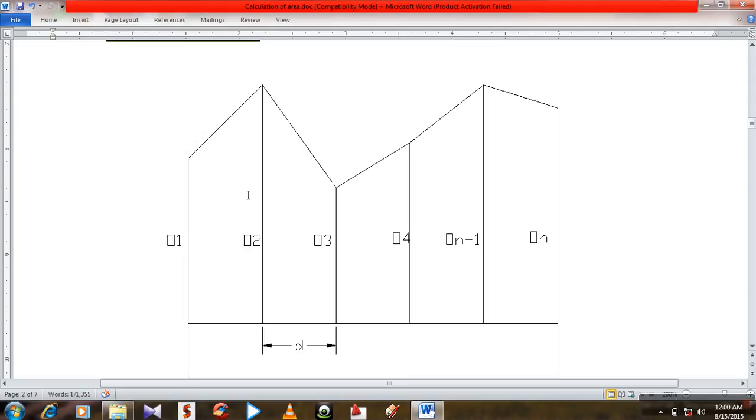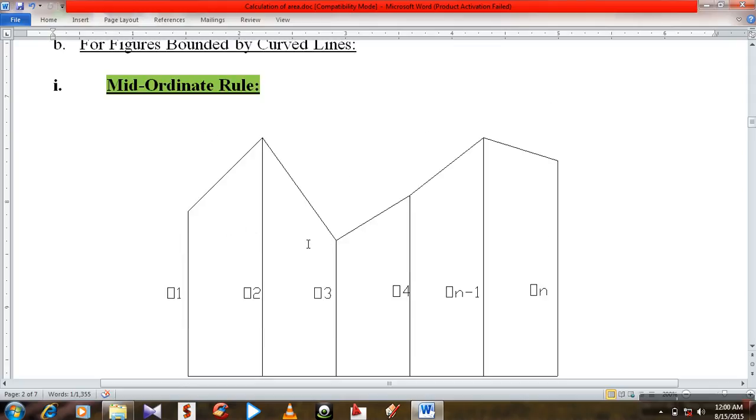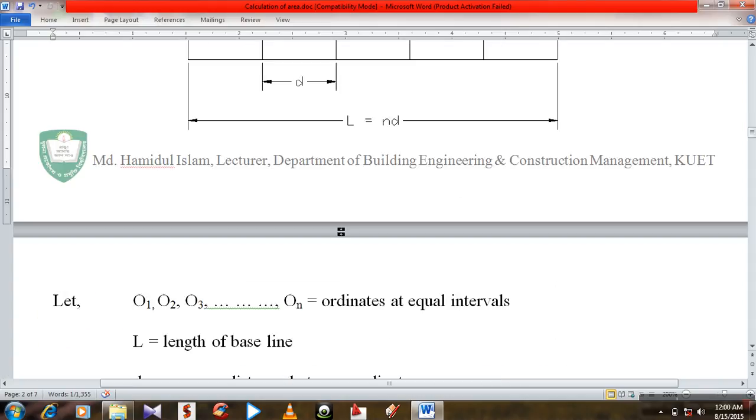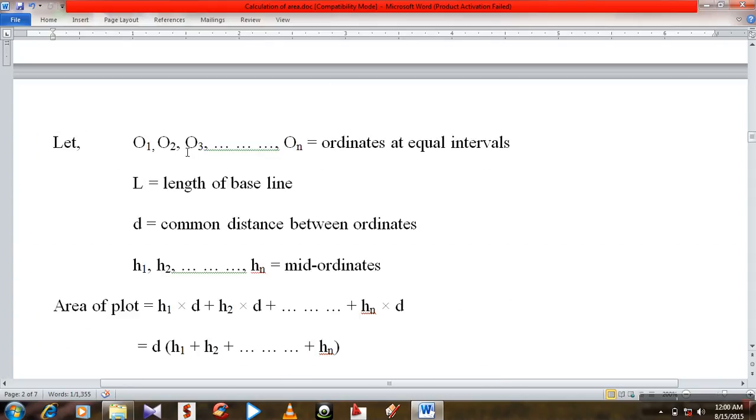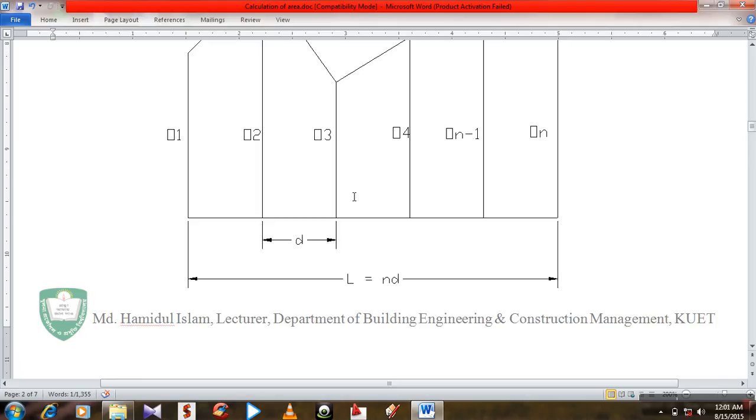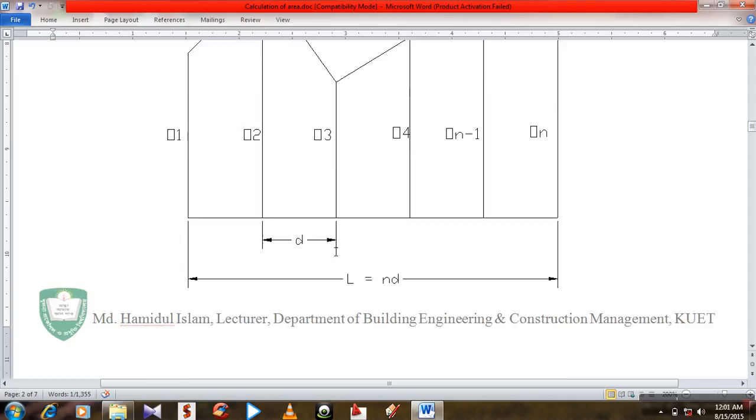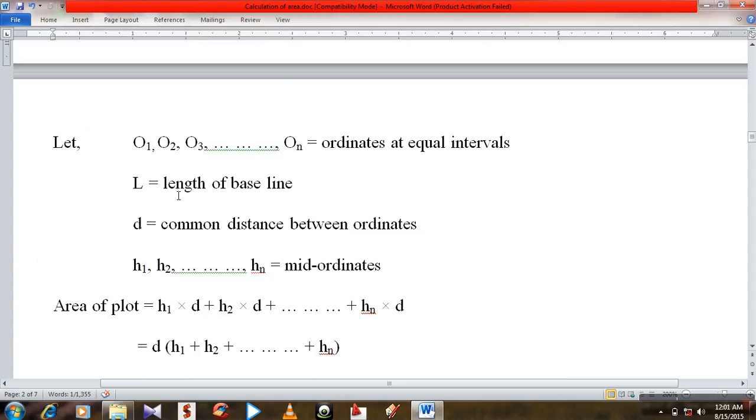Here is the surface, the curved surface, and ordinate O1, O2, O3, O4, ON minus 1, ON. That means ordinate 1 to N. Let O1, O2, O3 to ON, ordinate set equal and reverse. And the interval between the ordinates are equal, O1, O2, D, O2, O3. That means the length of the baseline.